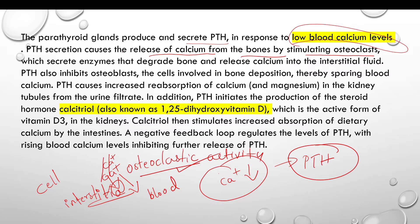Parathyroid hormone causes the release of calcium from the bones by stimulating osteoclasts, which secrete enzymes that degrade bone matrix.